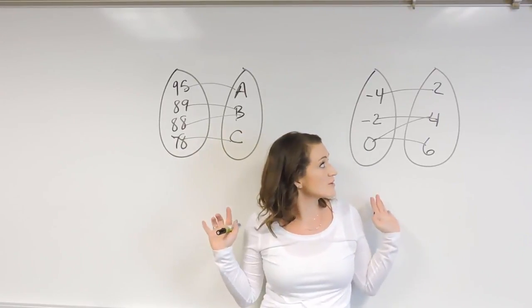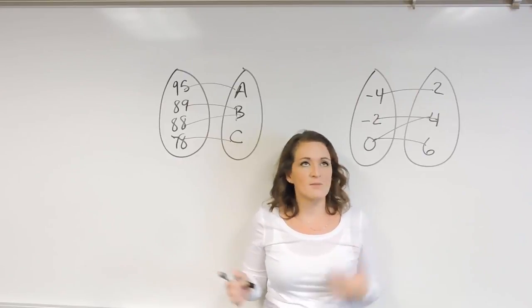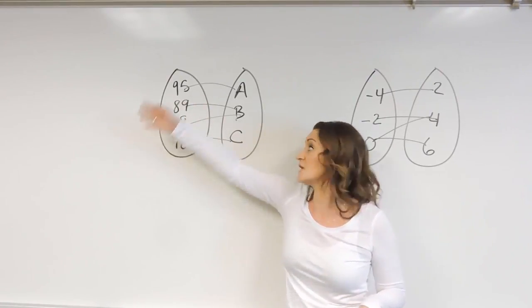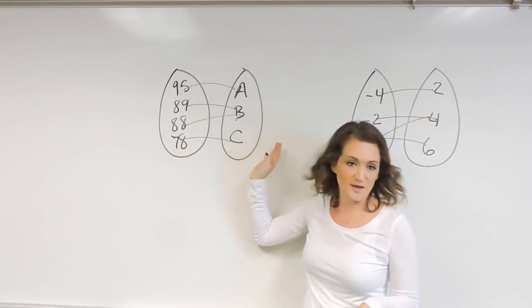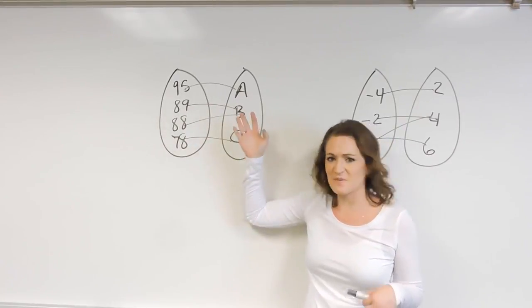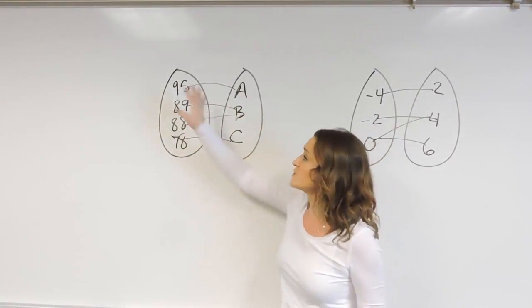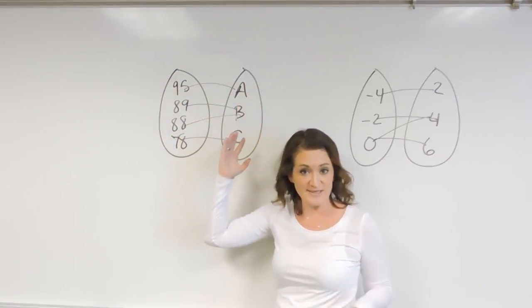For this particular example, we're given a mapping. A mapping is essentially just taking one set of information and assigning it to some other value. This side over here goes to this side over here.